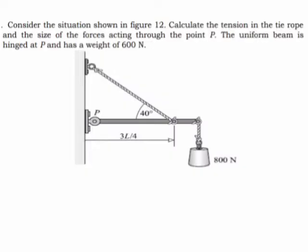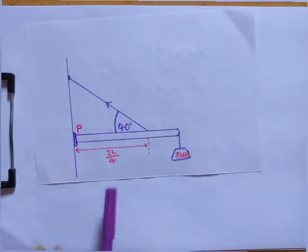When you hear 'uniform beam,' it means its weight or mass acts at its center. We are going to use two different concepts: the concept of horizontal and vertical forces, including torques — which some people call moments. We need to understand the simple principle of moments, which states that the anti-clockwise moment must be equal to the clockwise moment in summation.